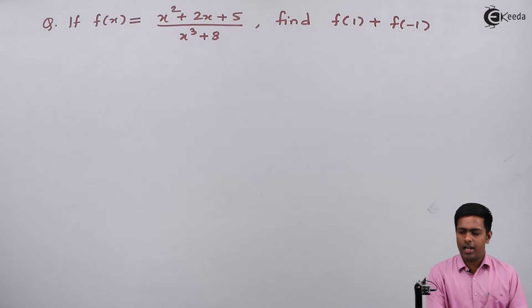To find the addition of f(1) and f(-1), I will first find the value of f(1), then find the value of f(-1), and substitute both values to get the answer. So let's start.